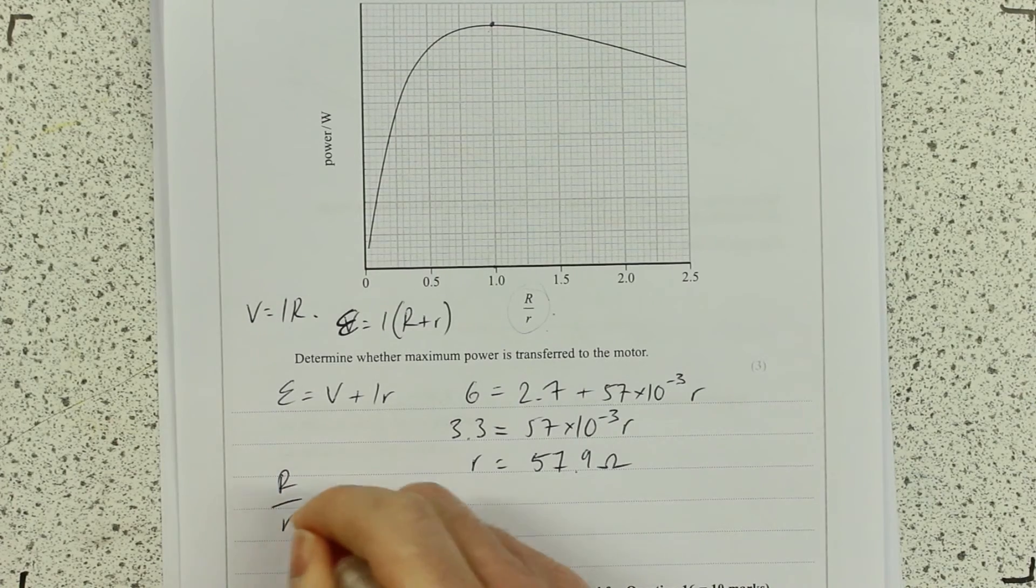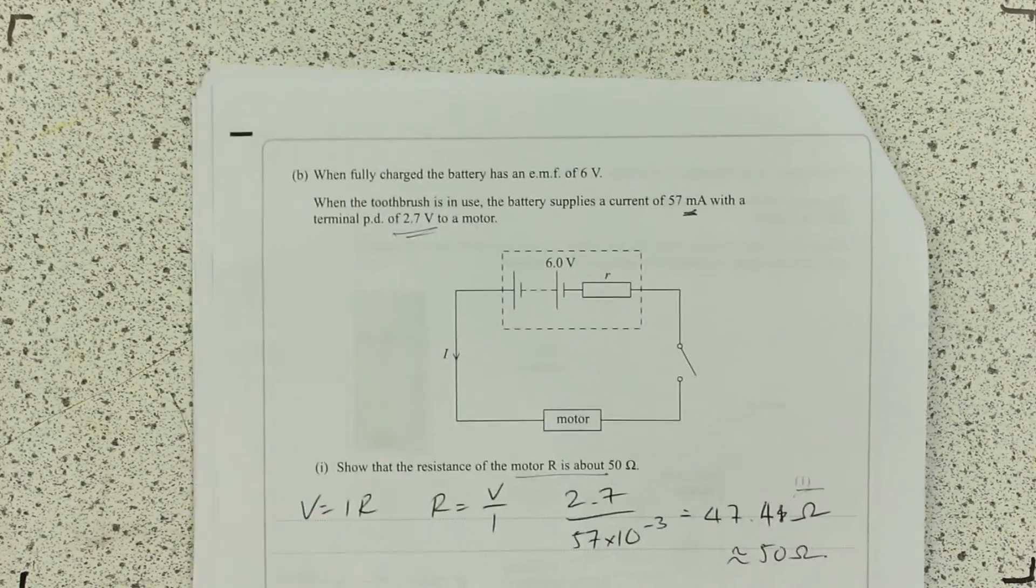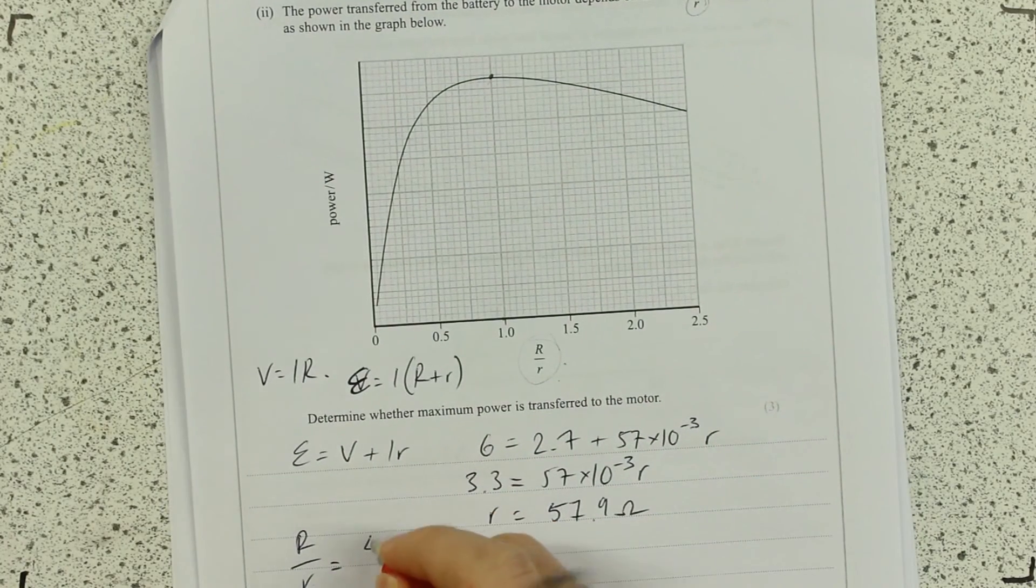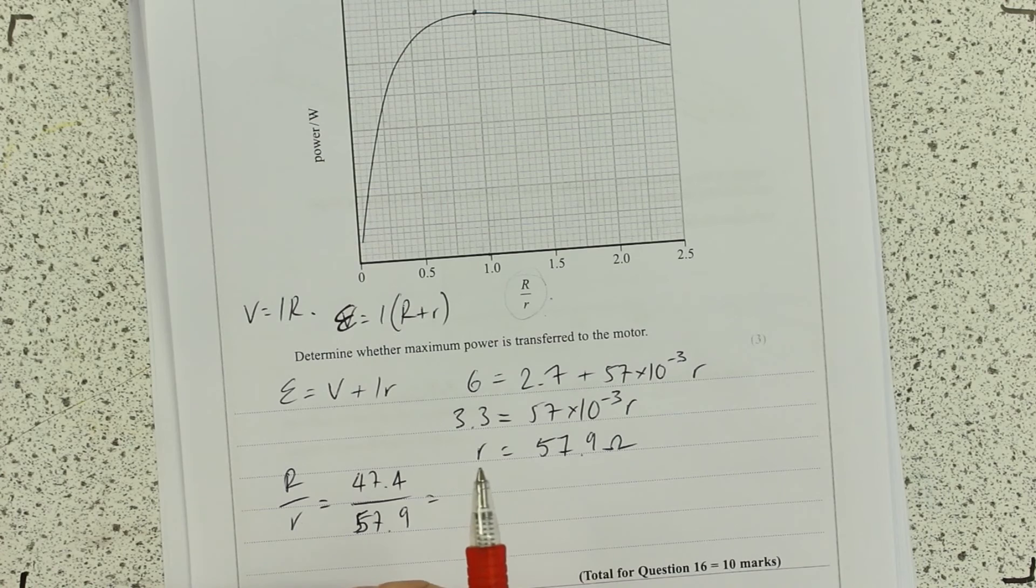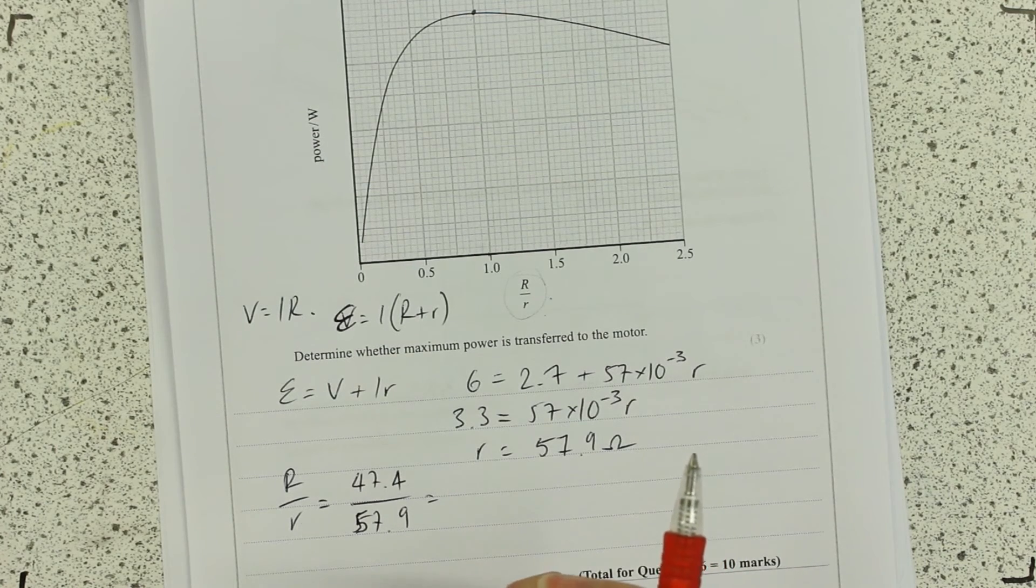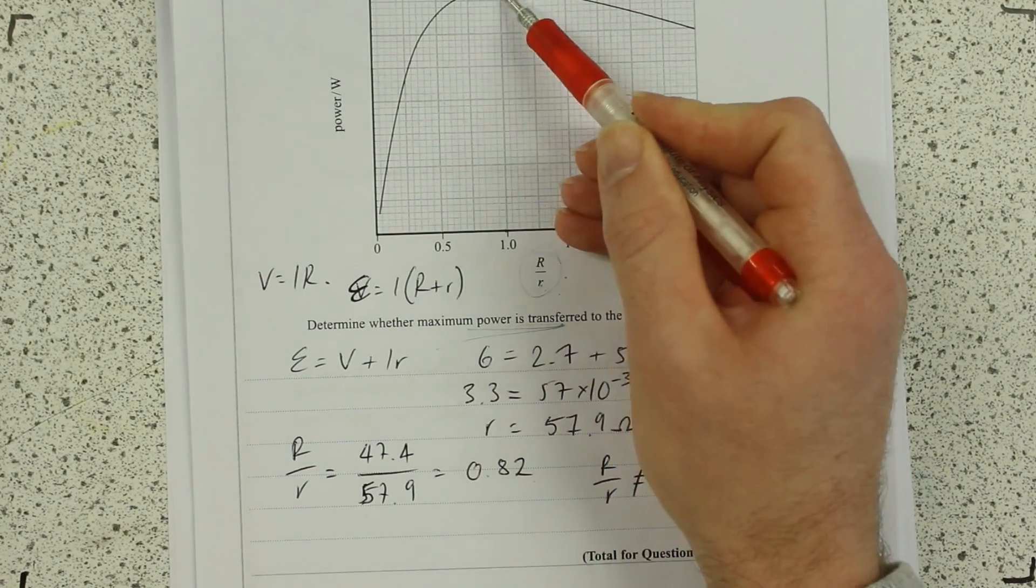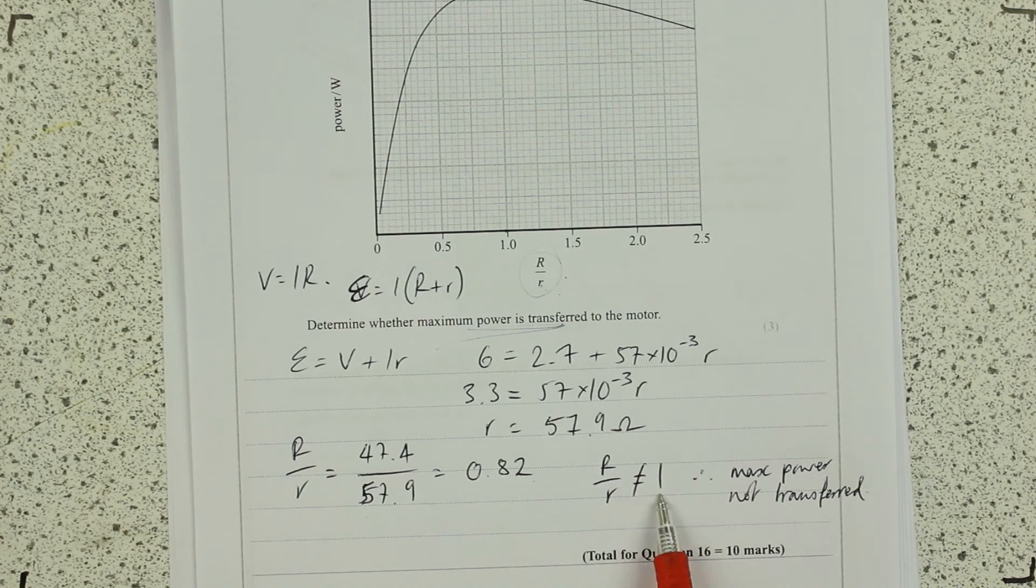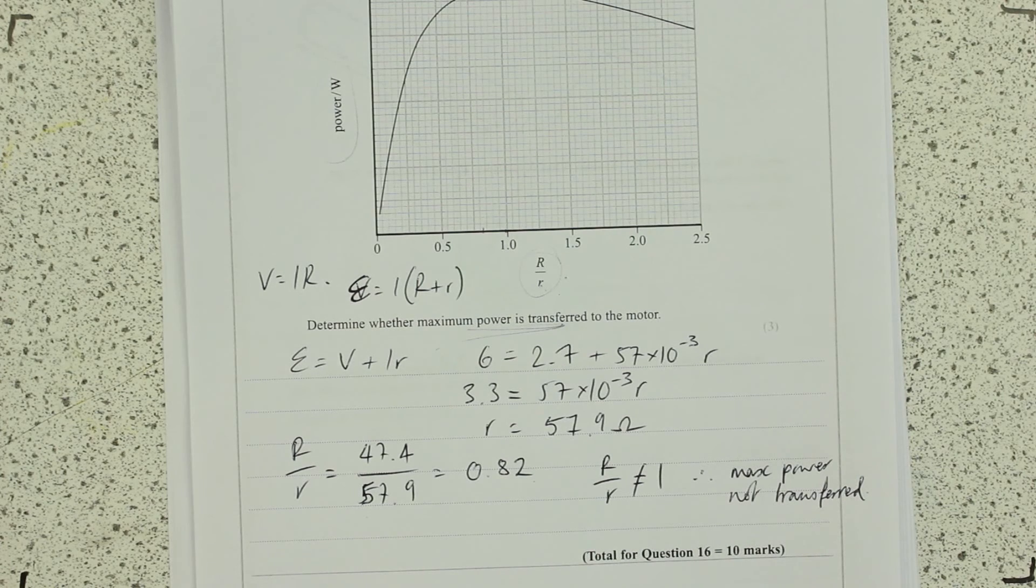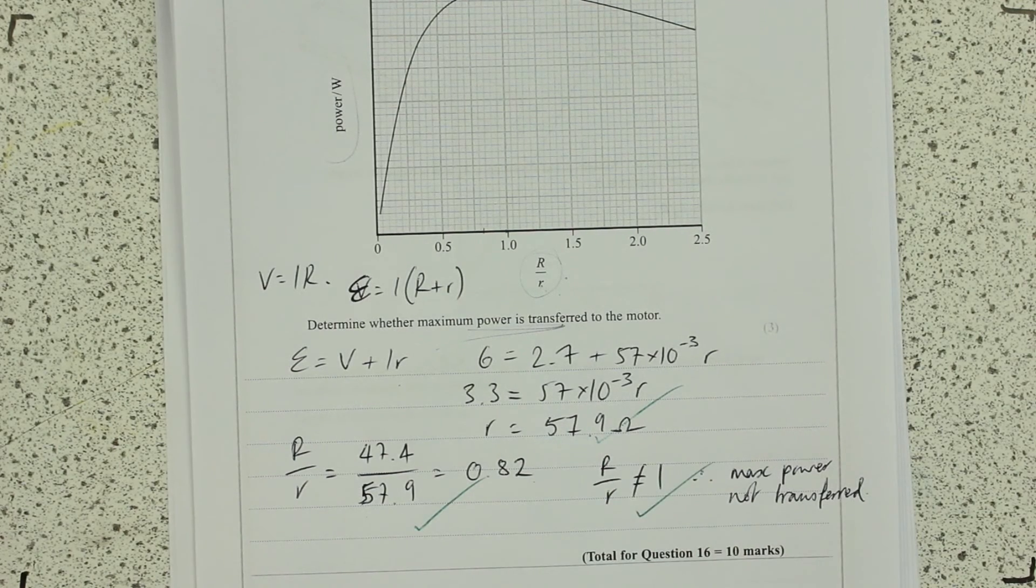So does r over little r equal 1? No, r over little r equals, I can use the show that value, or I can be more accurate and use my own value, 47.4. The ratio is 0.82. So, is maximum power transferred? Does r over little r equal 1? Well, no, it equals 0.82. So r over little r does not equal 1, therefore max power is not transferred, and it's not quite at the maximum power. It's close, but not quite. I hope that makes sense. The three marks in that are using this equation to figure that out, using that to work out the ratio, and then saying that they're not equal, therefore max power is not transferred.